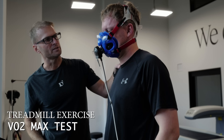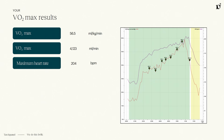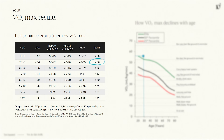He did both a Zone 2 and a VO2 max test. With a proper warm-up protocol, he achieved an amazing result: his VO2 max was 4.1 liters per minute, achieved at a heart rate of 204 beats per minute — higher than predicted for his age. Normalized by weight, he was at 56.5 milliliters per kilogram per minute, placing him at the 97th percentile for his age group, meaning his VO2 max was higher than 97% of people his age.